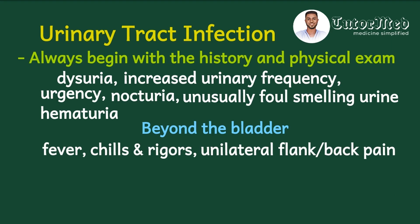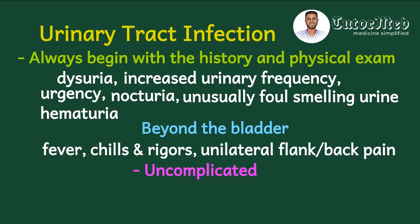Any symptomatic UTI confined to the bladder — with dysuria, frequency, and urgency — is an uncomplicated UTI. Once it goes beyond the bladder, it becomes complicated. Acute pyelonephritis is an example of a complicated UTI. Initially, once a man developed a UTI it was considered complicated, but that is no longer the case.